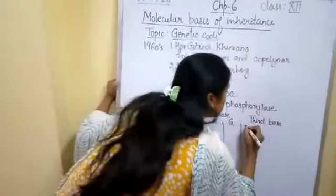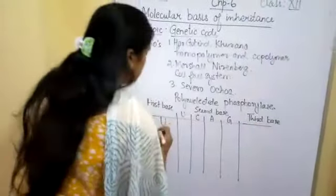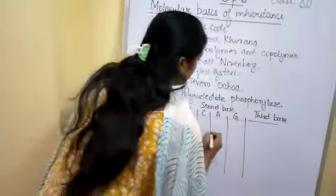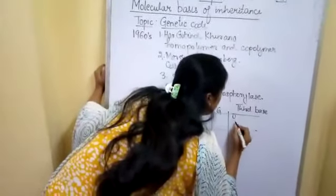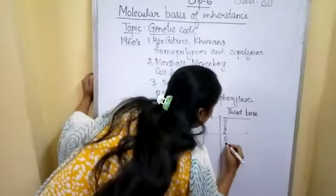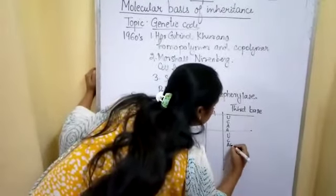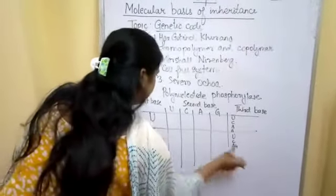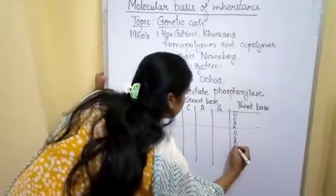But in the third base we will be taking for each particular so that there is a combination of triplet codon. U, C, A, G. U, C, A, G. It will be for the second.